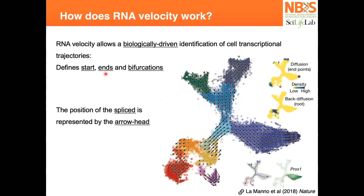The position of the spliced version is usually represented by arrowheads. Here in this map, the origin cells are somewhere in the center, and then you start having more velocity. Velocity is usually higher when you have the transitional cells, which also highlights the importance of having all transitional cell states. Then velocity reduces, the cells spread out in different directions, and you see them bifurcating into different cell types.